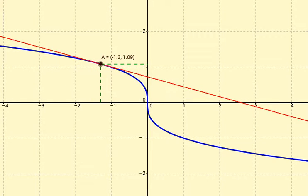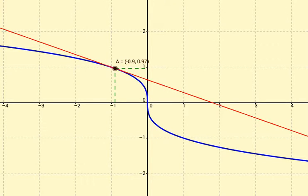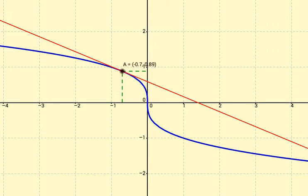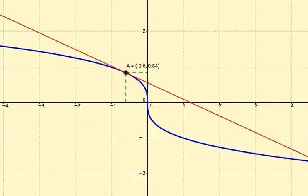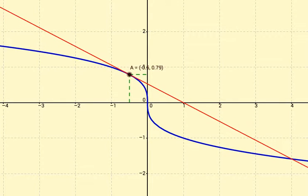As I move along the curve to the right, the slope of that tangent line is still negative, which means the derivative at any point along the curve over here is going to be negative.